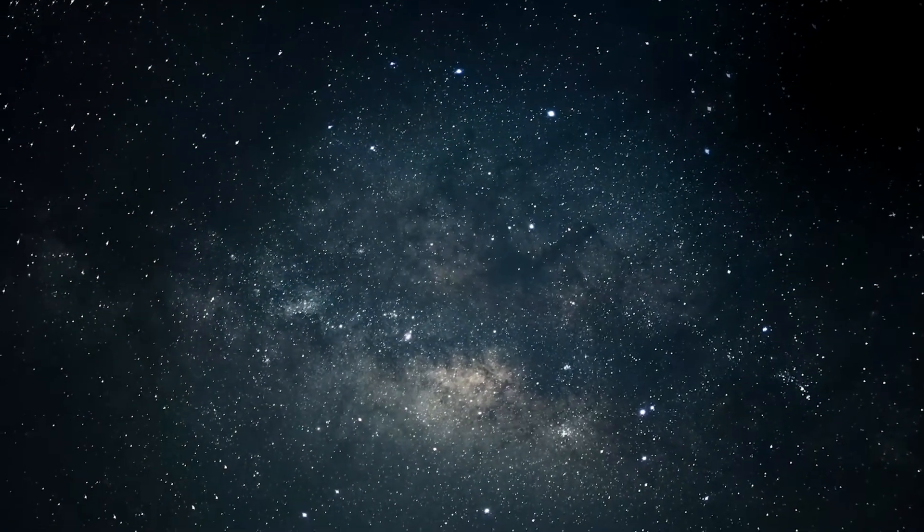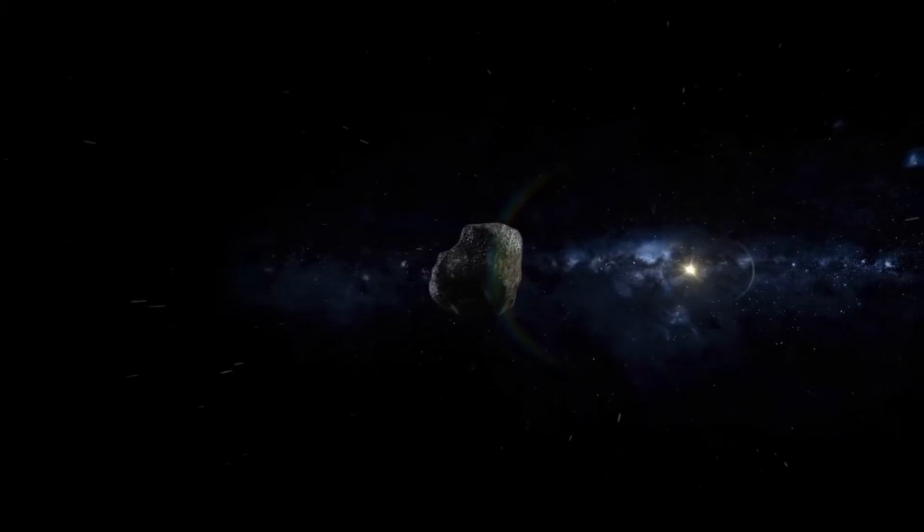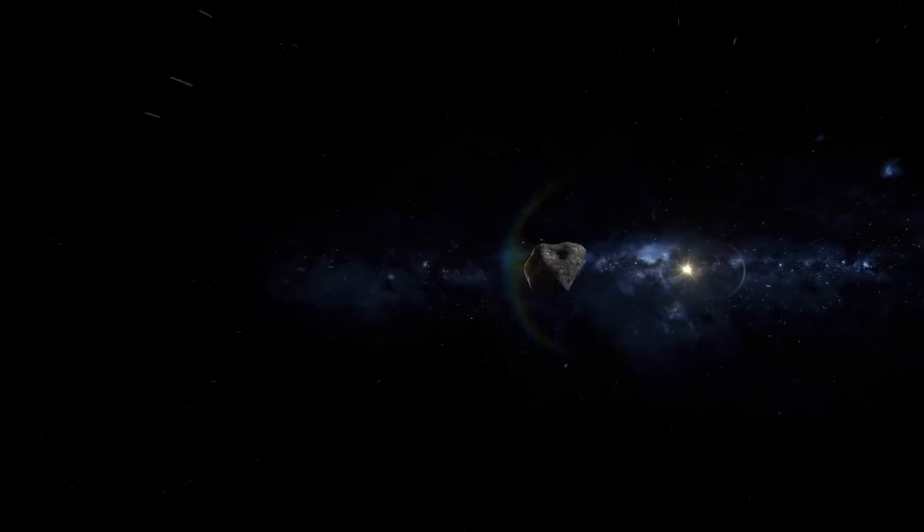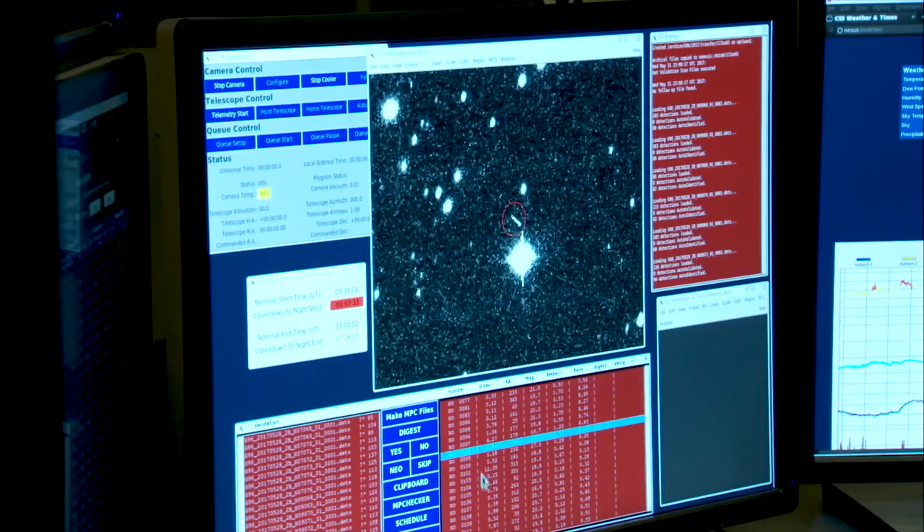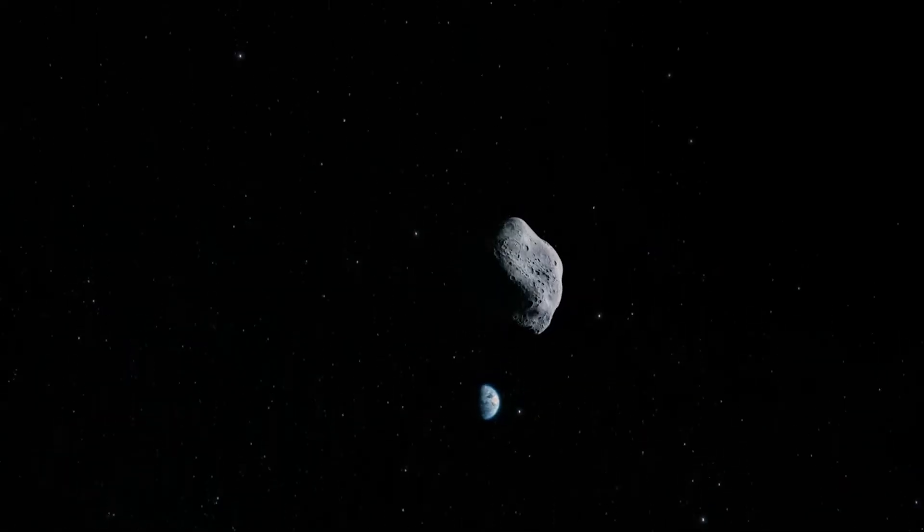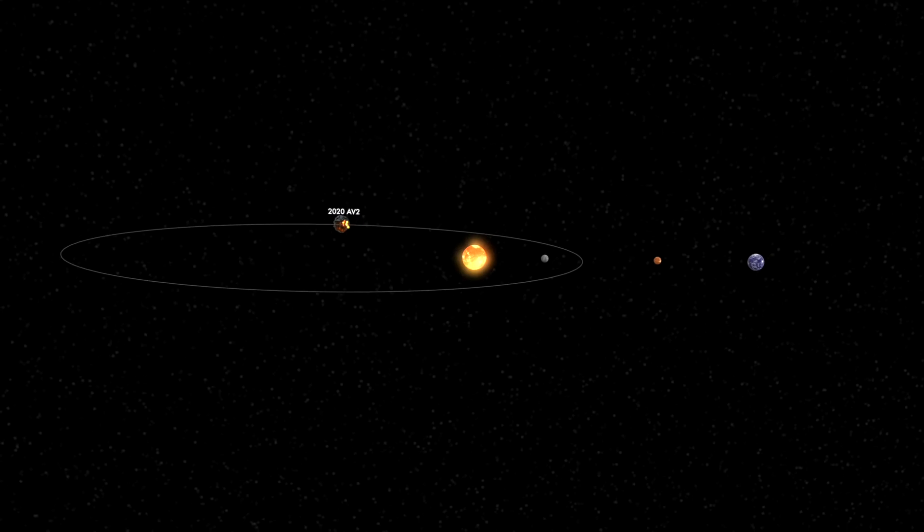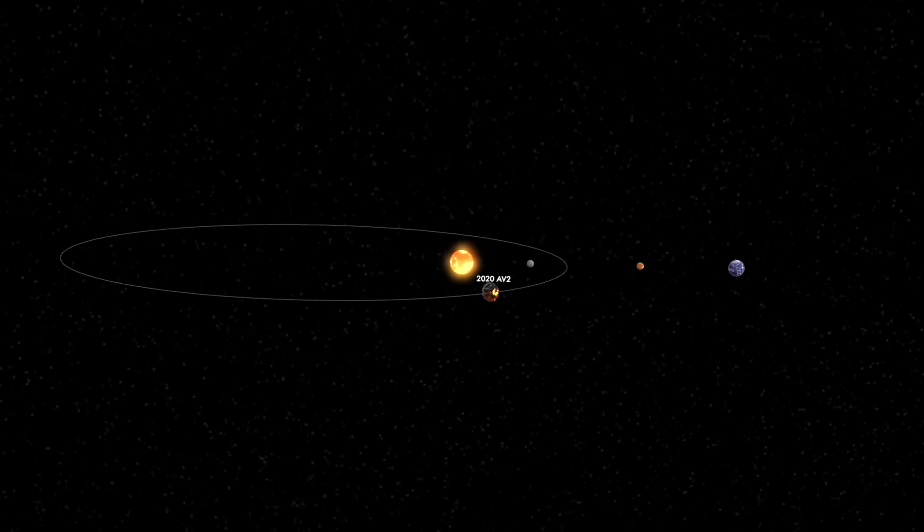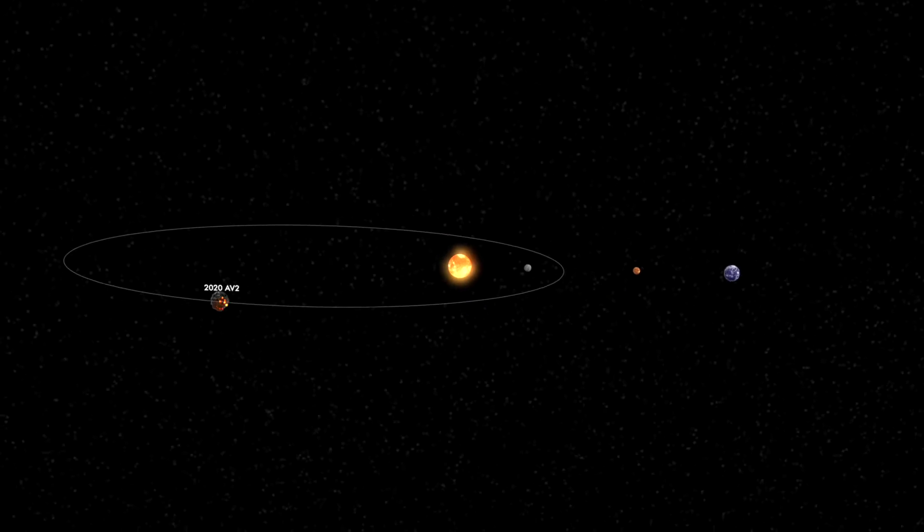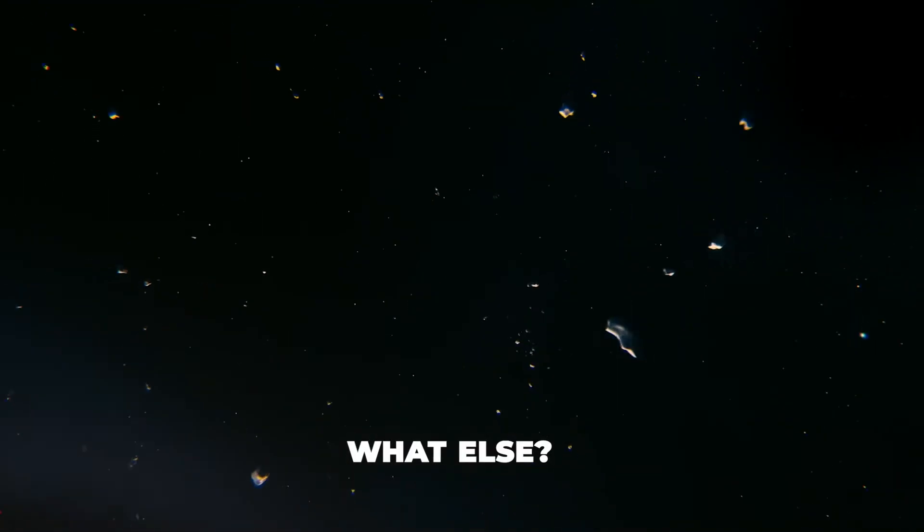Sometimes it's easy to forget just how large space is, that an object like this so close to Earth on the scale of the cosmos remains completely hidden for years before its eventual discovery. But this asteroid does not pose any threat to us on Earth. At its closest, it will still be over 11 million kilometers away. It does not show any sign of changing its orbit anytime soon, but it makes you think what else could be lurking out there, right in our backyard.